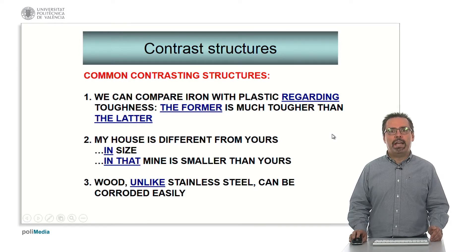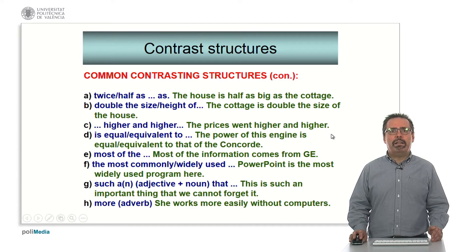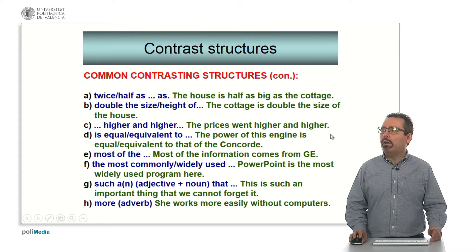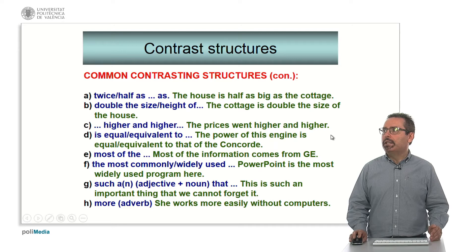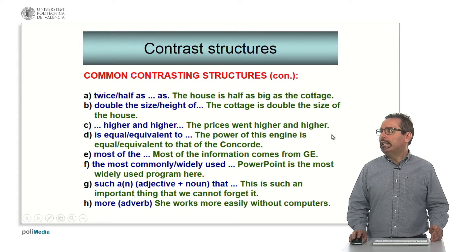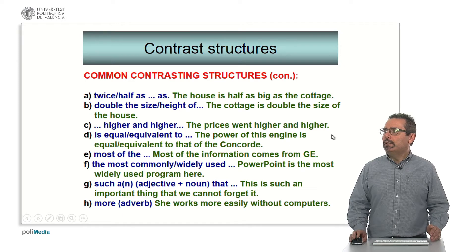We can use expressions with 'unlike': 'Wood, unlike stainless steel, can be corroded easily.' Here we have a collection of very typical contrasting structures in English. When we make a quantity comparison, we can use 'twice or half as big as'. The house is half as big as the cottage, or twice as big as the cottage. Example two is with 'double': 'double the size', 'double the height', etc. — 'The cottage is double the size of the house.'